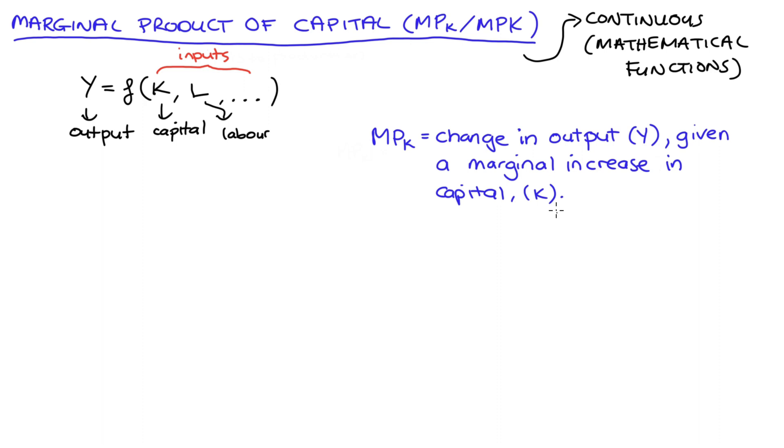In words, our marginal product of capital will be equal to the change in output when we increase our level of capital by some marginal amount. So we're increasing capital and we see what happens to output.